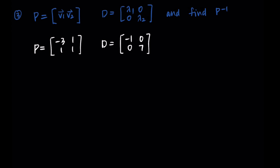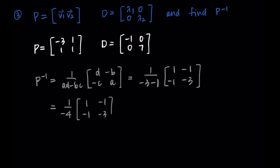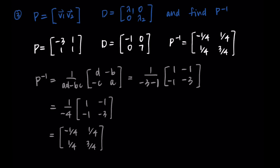Our last task is now just to find P inverse. For a 2 by 2 matrix, the inverse is 1 over AD minus BC, and then we swap A and D and put negatives on B and C. Using this, I'm getting 1 over negative 3 minus 1. In the matrix, the first row is 1, negative 1 and the second row is negative 1, negative 3. So the constant on the outside is negative 1/4. Distributing that in, P inverse is: negative 1/4, 1/4 in the first row, and 1/4, 3/4 in the second row.